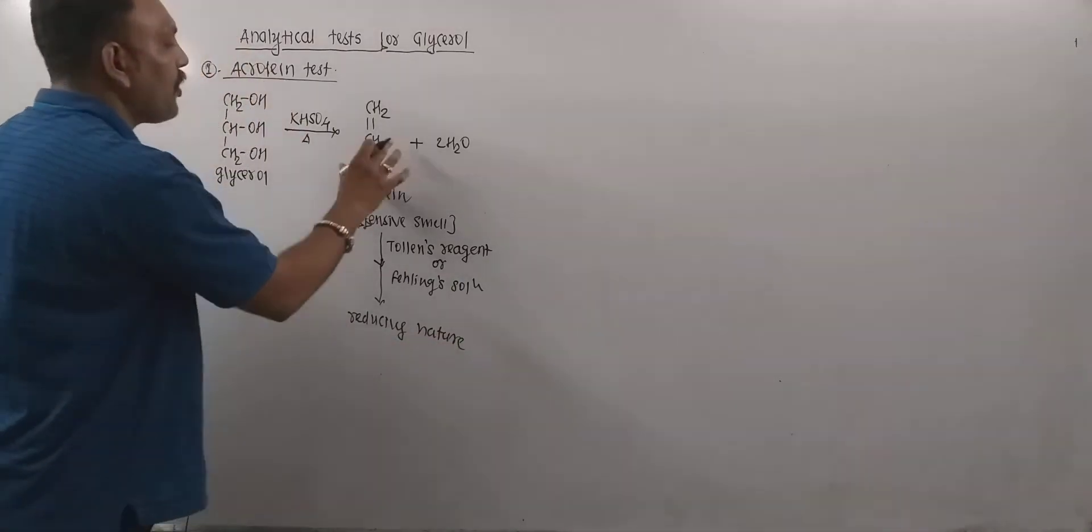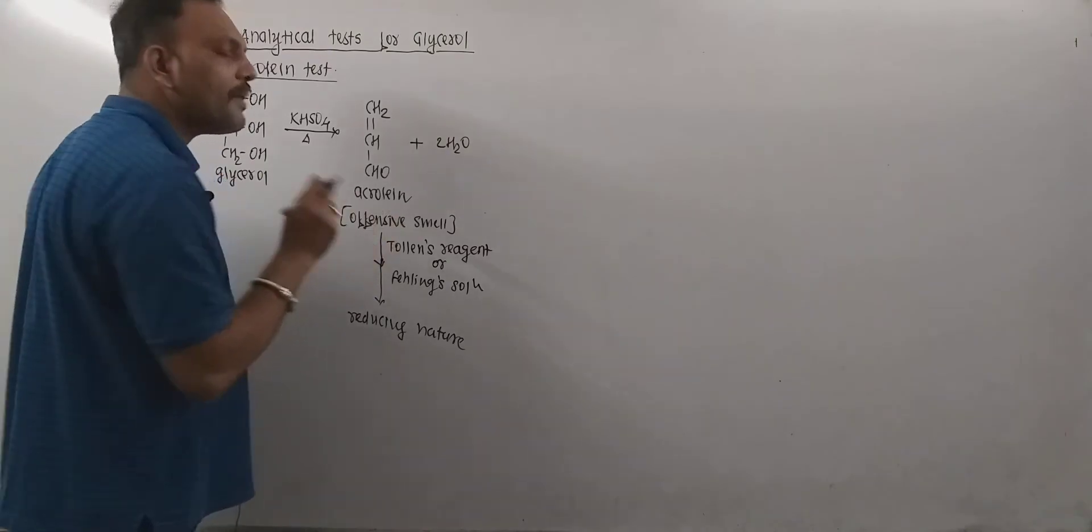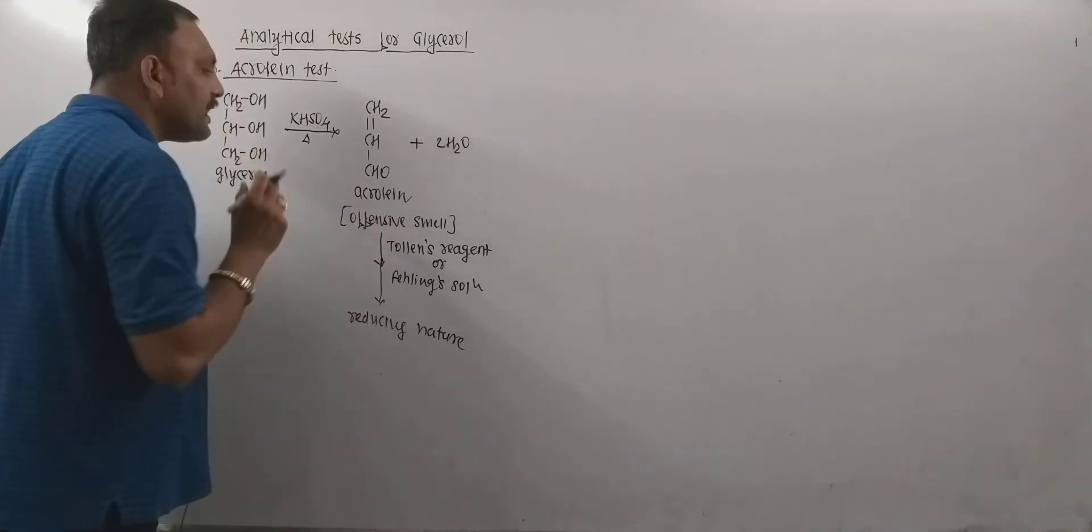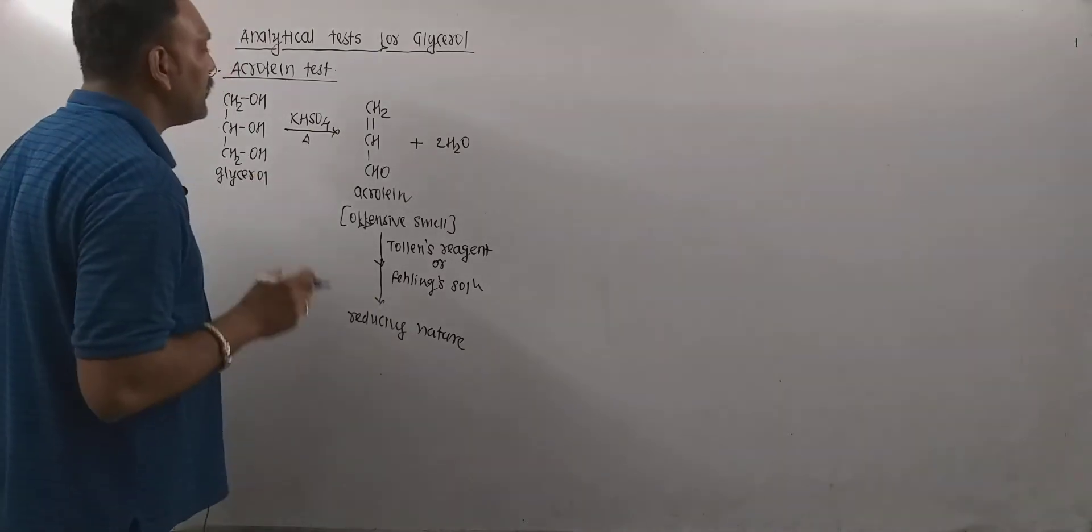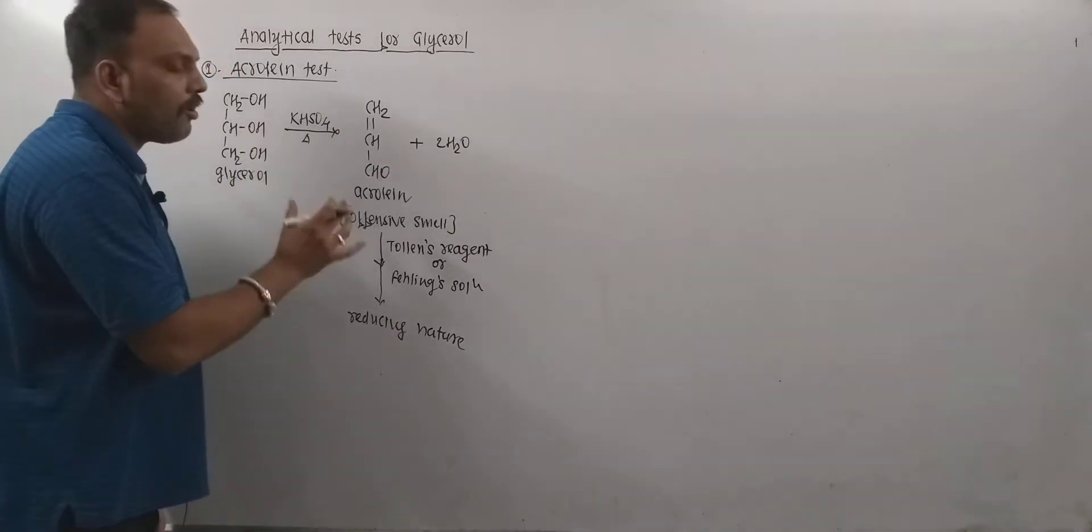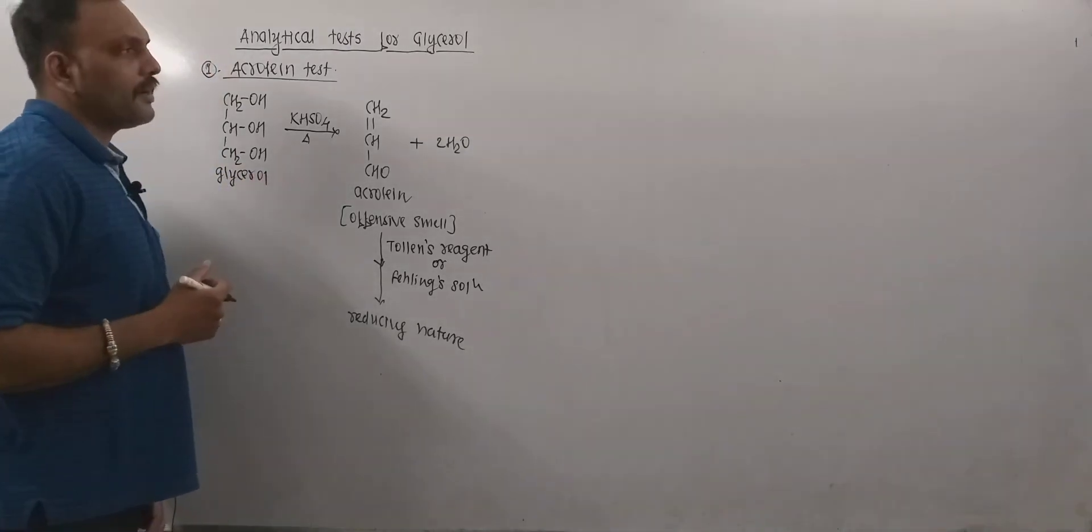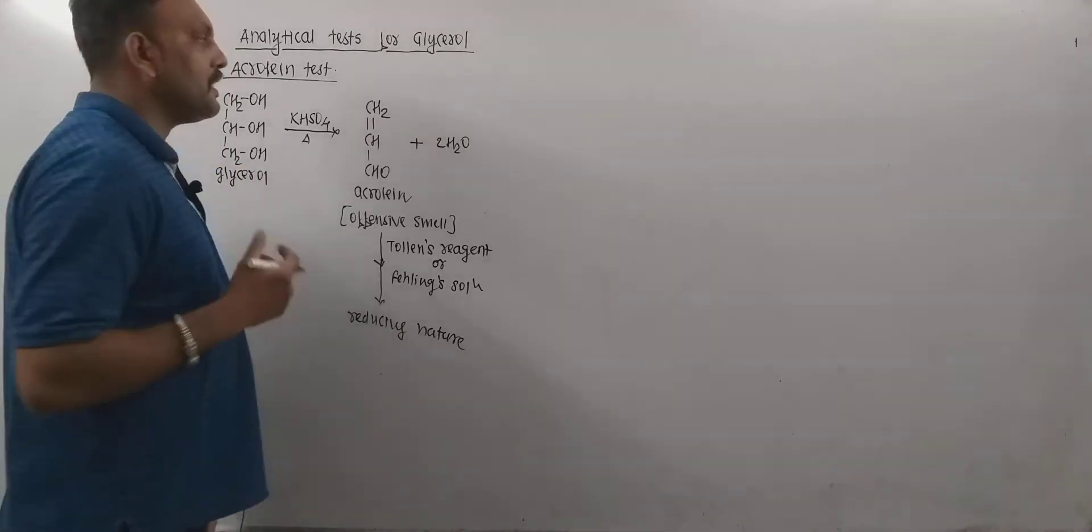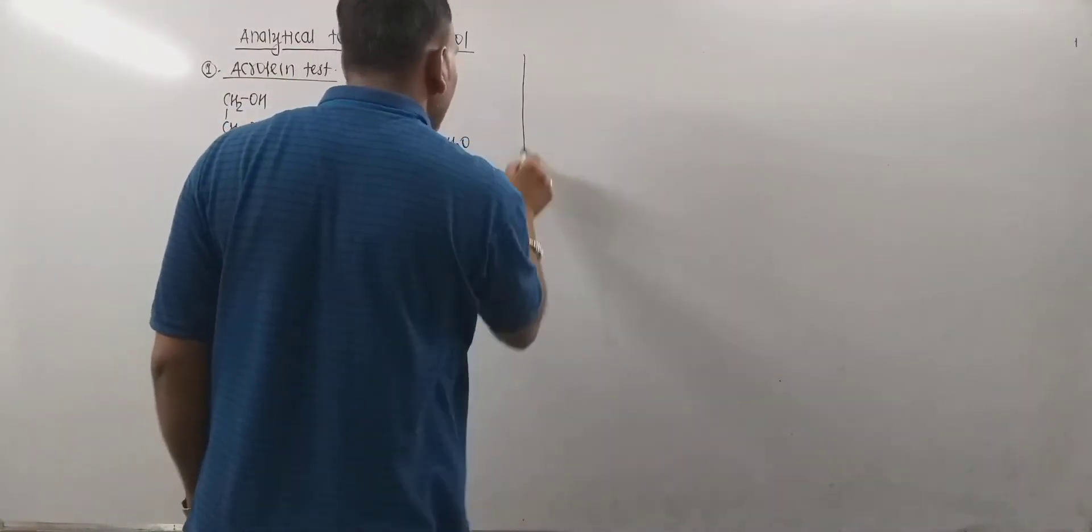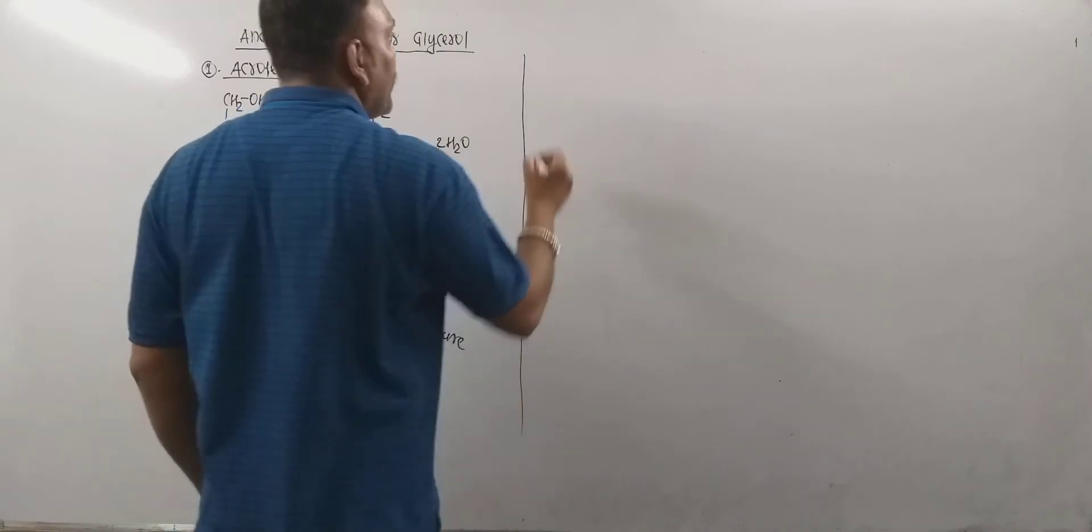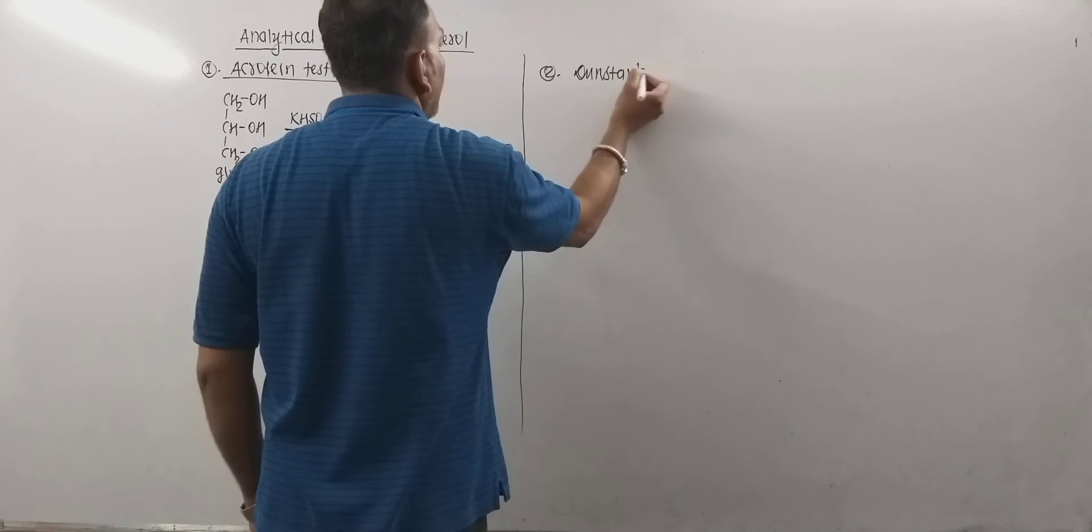...of the product indicates that it is aldehyde, and that aldehyde has offensive smell too. So it indicates that the aldehyde so obtained is acrolein, and the dehydration of glycerol leads to the formation of acrolein. In this way glycerol is identified. So this is very popular under the name acrolein test. Now the second analytical test is Dunstan's test.